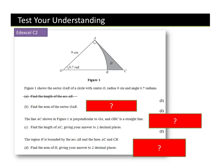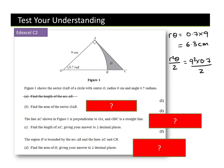Find the length of arc AB: arc length = r × theta = 0.7 × 9 = 63/10 = 6.3 cm. Remember your units. Find the area of sector OAB: sector area = r² × theta/2 = 9² × 0.7/2 = 81 × 0.7/2 = 28.35 cm².